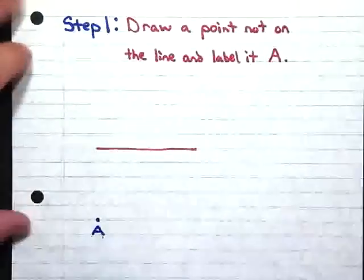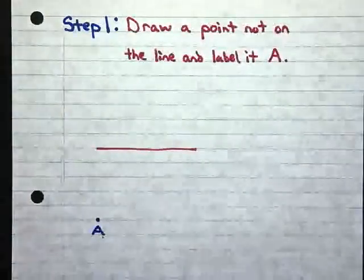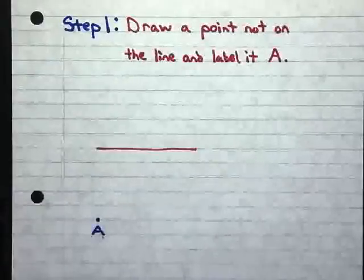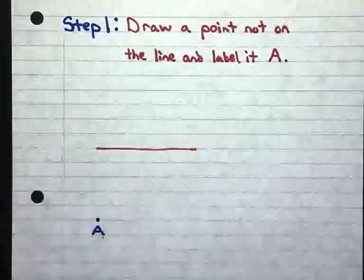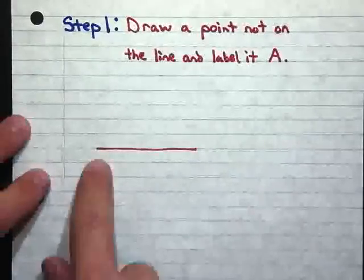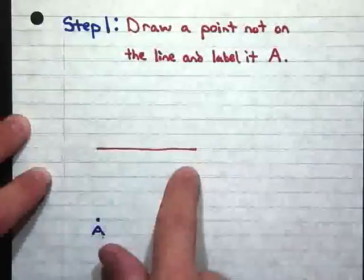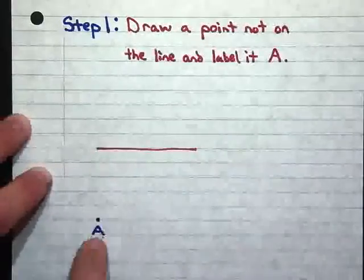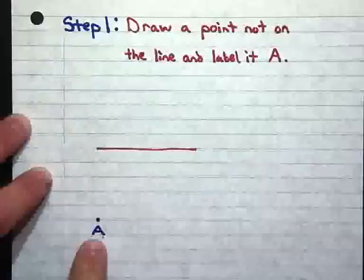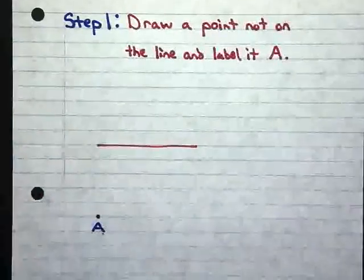Let's go ahead and take a look at step one. Step one is, you're going to draw a point not on the line and label it point A. You can see here that we're given our original line. So, we draw a point that's not on the line and label it A.